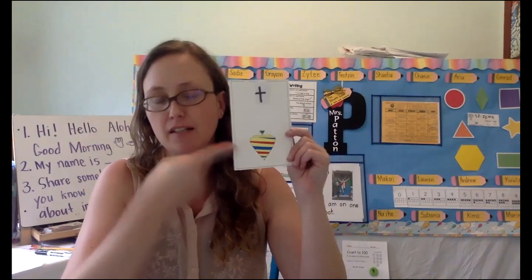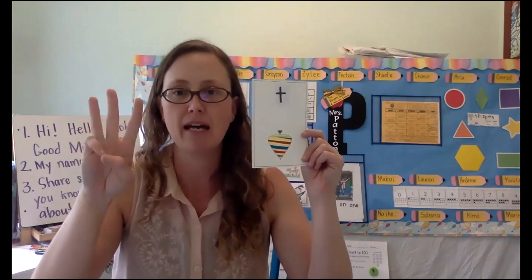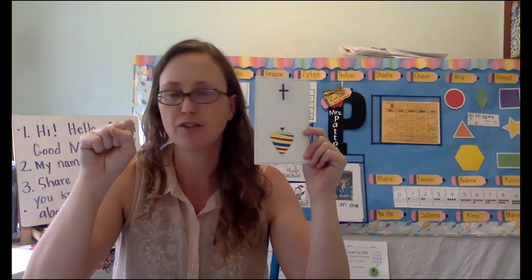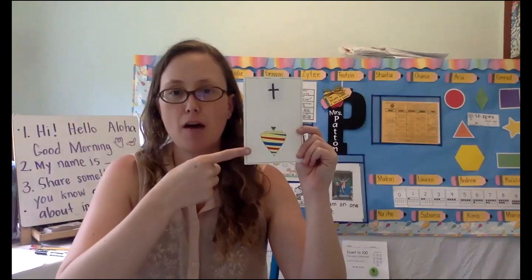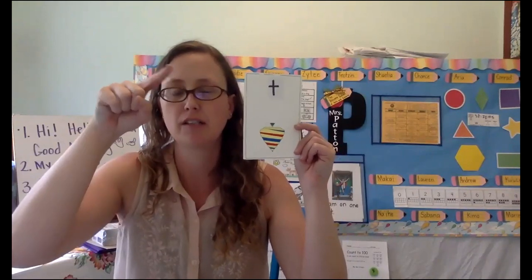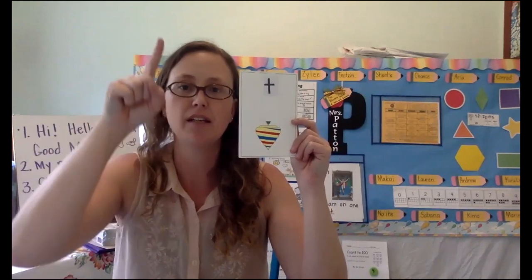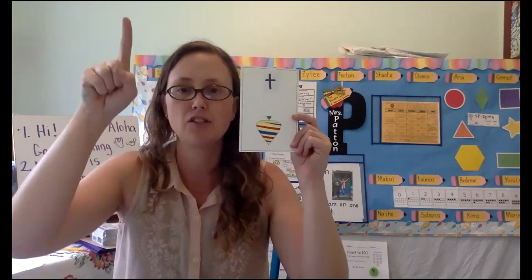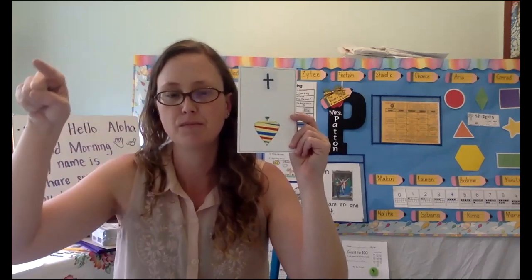All right, let's go ahead and do our three steps. First we say the letter's name, then we say the picture's name, and last we make our sound. So here we go, get your finger out. T, ta, t, t. Let's do it again. T, ta, t, t.